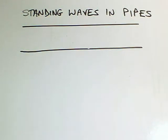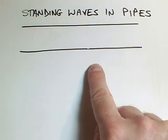Okay, we're going to look at setting up standing waves in pipes. So these two lines are supposed to be the cross-section of a pipe.